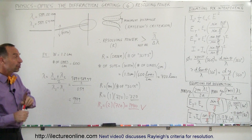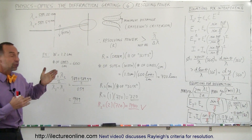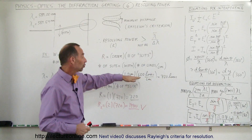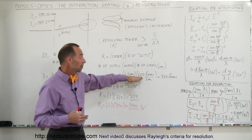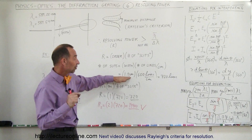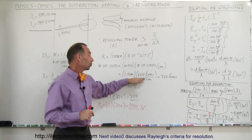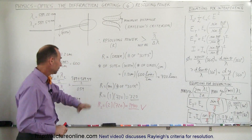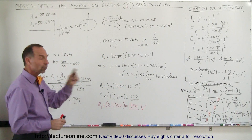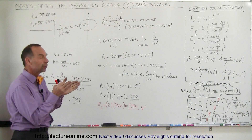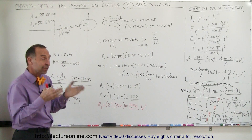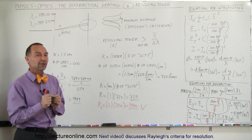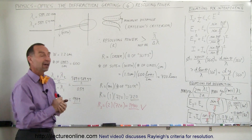That's what we mean by the resolving power of a diffraction grating. If you want to see the separation without going to the second order, you can use a diffraction grating with more slits per centimeter. For example, using one with 2,000 lines per centimeter at 1.2 centimeters wide gives 1.2 × 2,000 = 2,400 total lines, which is much greater than 999. So in the first order you would already be able to resolve the lines. The greater the number of lines per centimeter, the higher the resolving power.